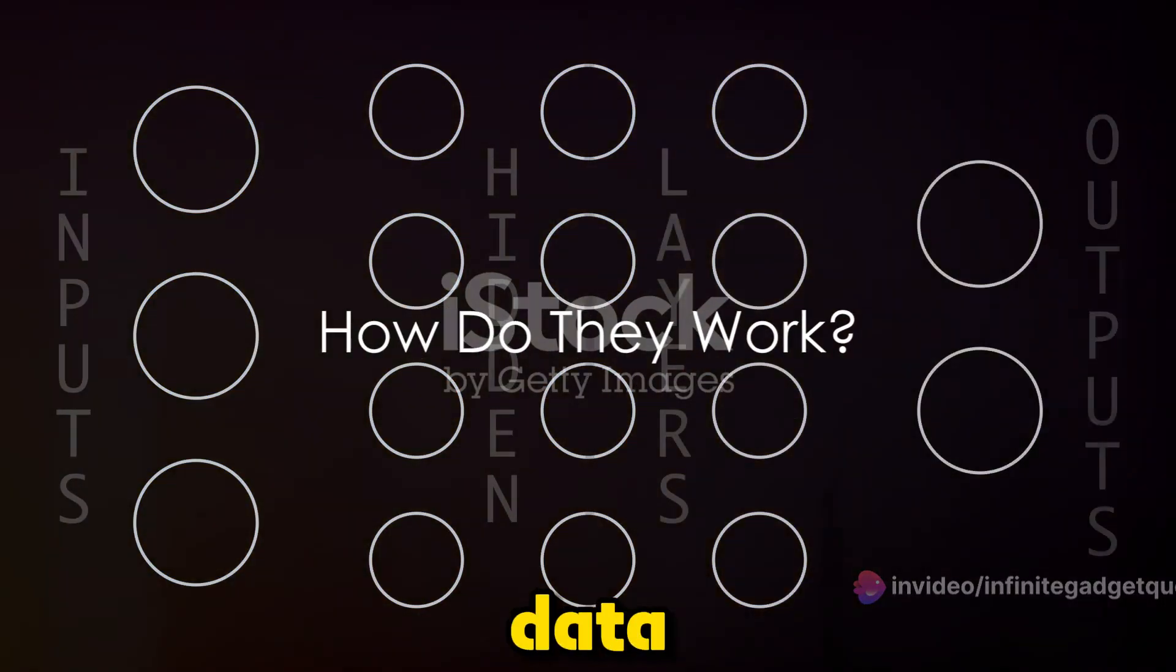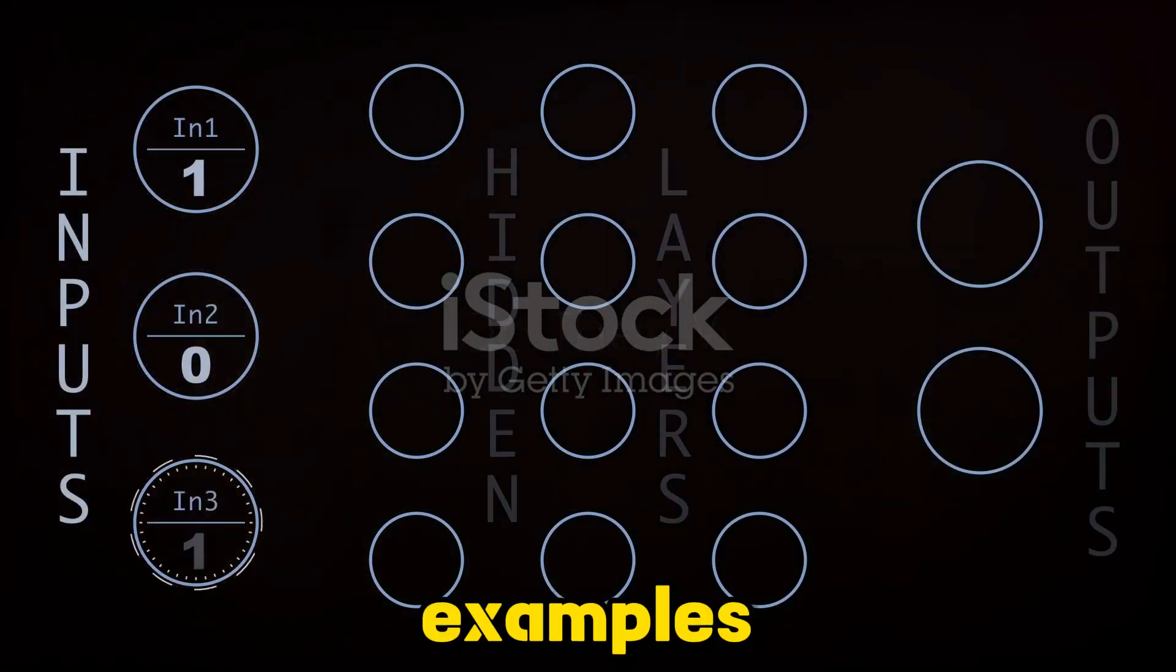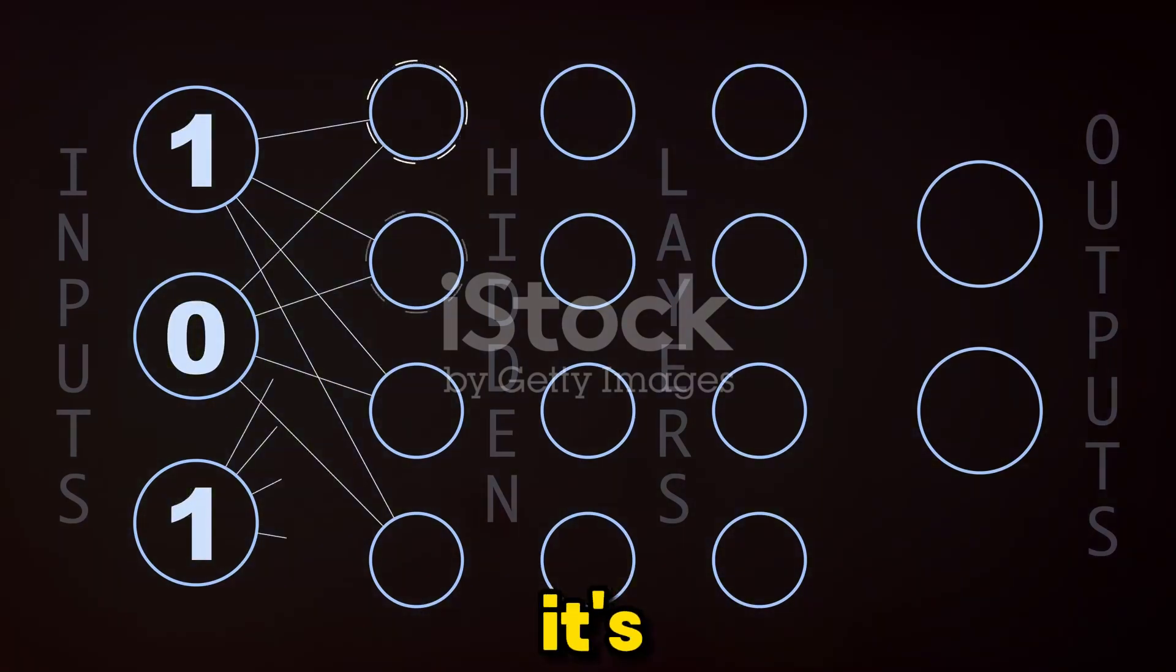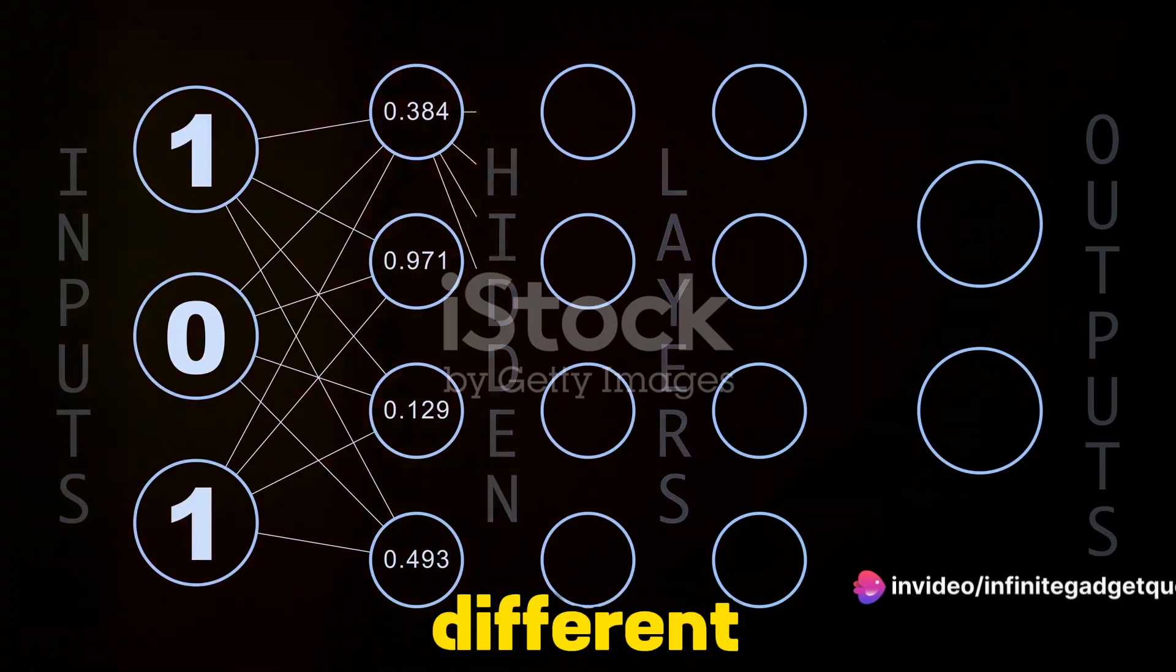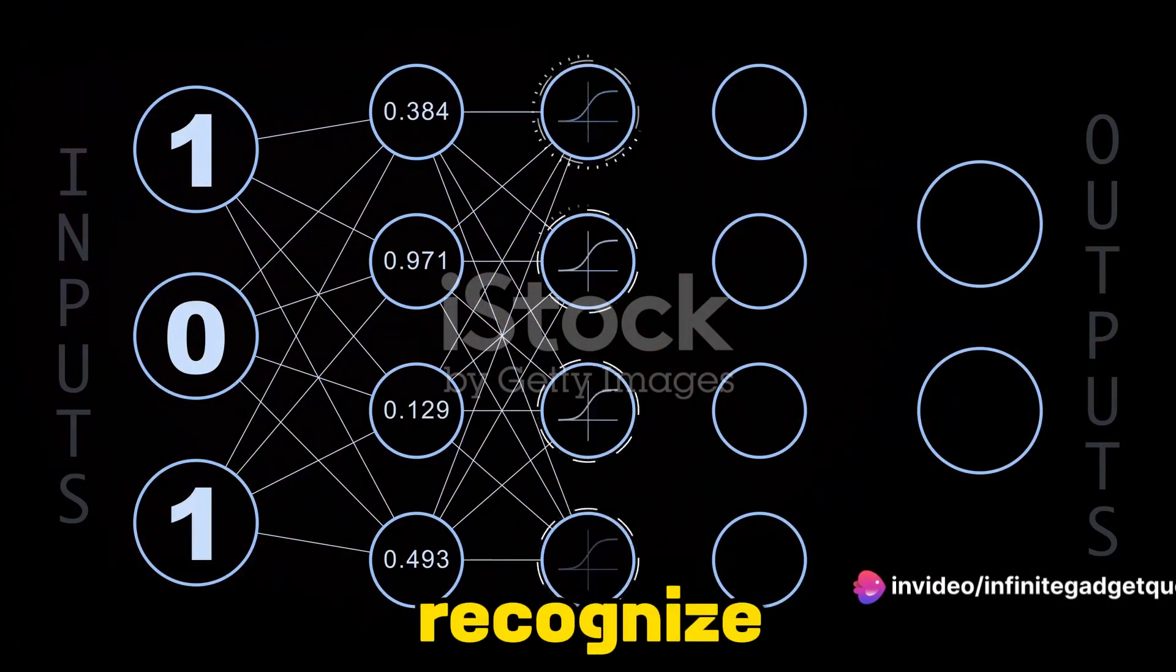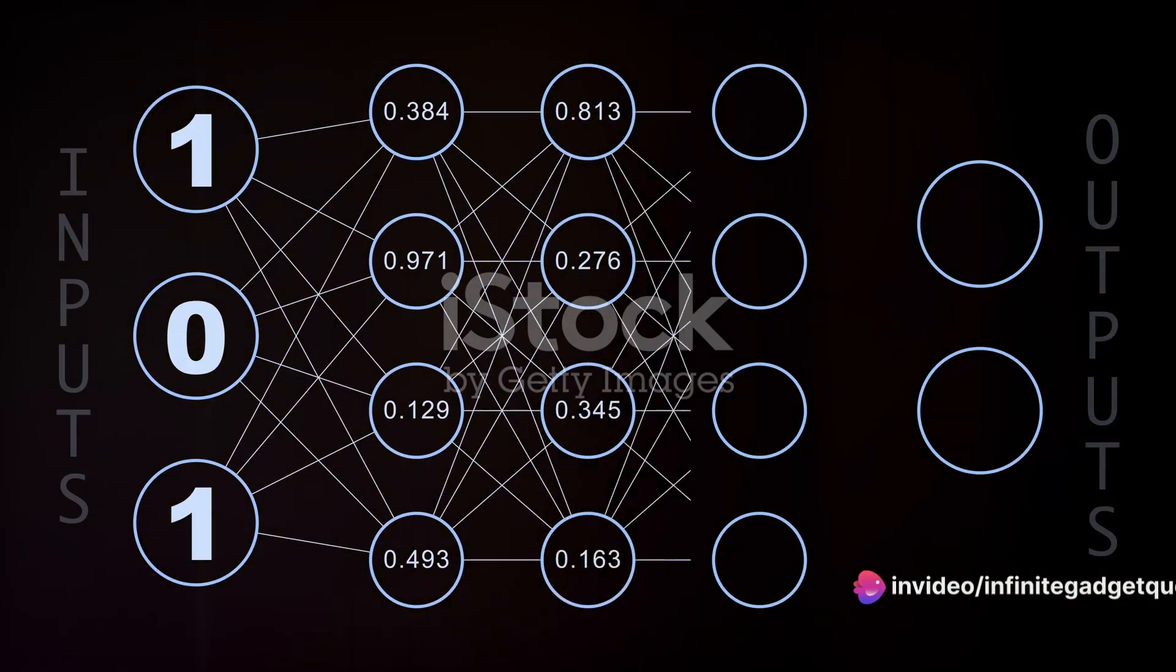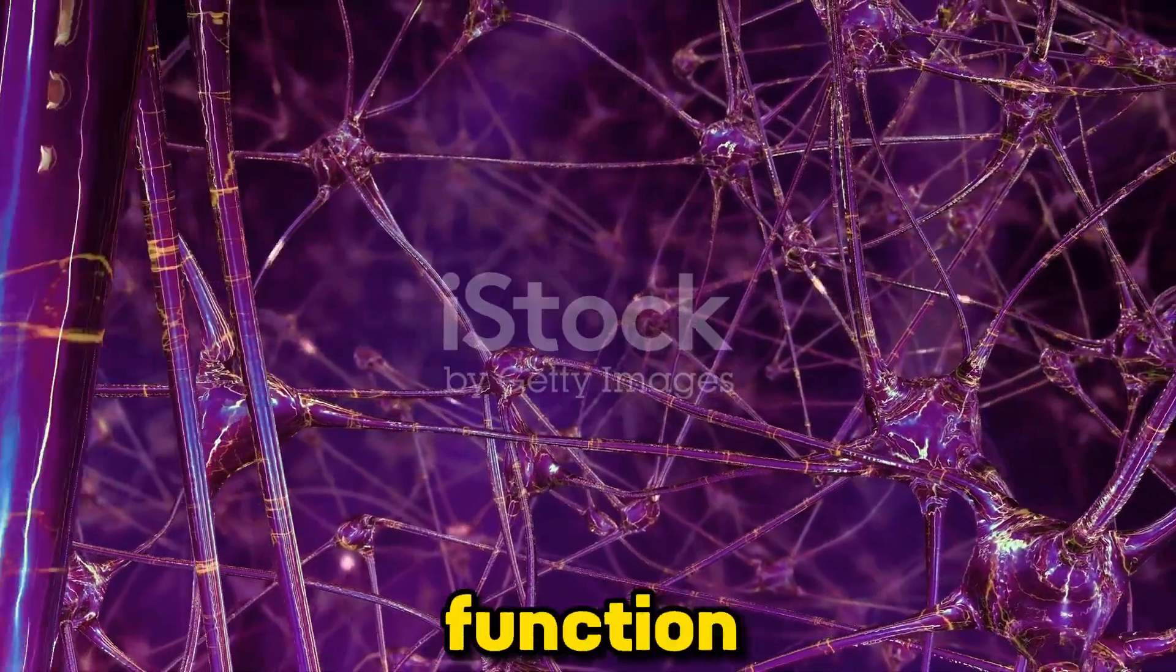Neural networks learn from data. Not just any data but examples that we provide to them. It's a bit like teaching a child how to recognize a dog. We show them pictures of different dogs again and again until they can recognize a dog they've never seen before. That's essentially how neural networks function.